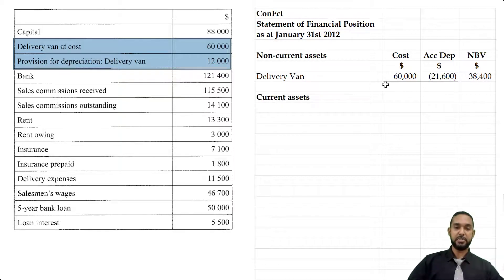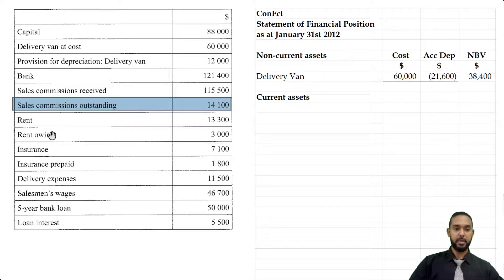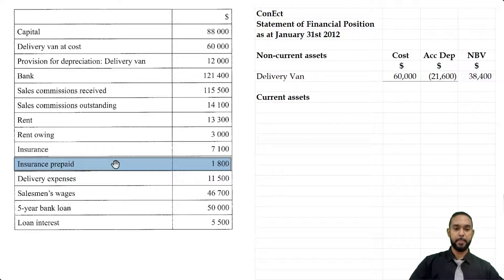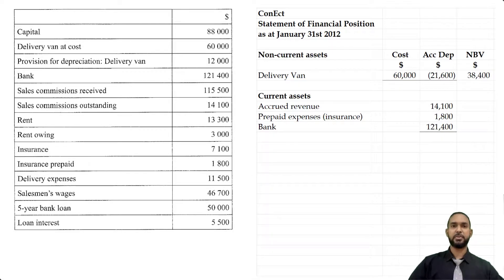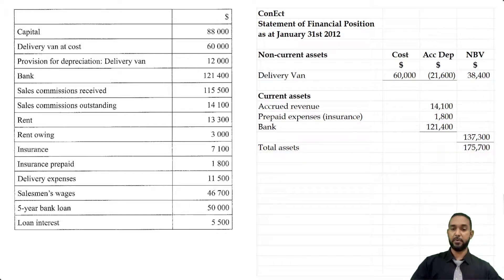Now we have current assets. I'm seeing a couple: sales commissions outstanding — that's accrued revenue — and a prepaid expense, insurance prepaid, and of course the bank item. So we're going to put those three things in the current asset section: accrued revenue, prepaid expenses, and bank. That gives us a subtotal of 137,300, which we add to the net book value of the non-current assets above to give us a total asset value of 175,700.